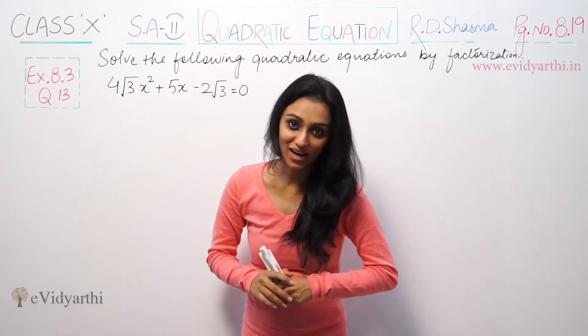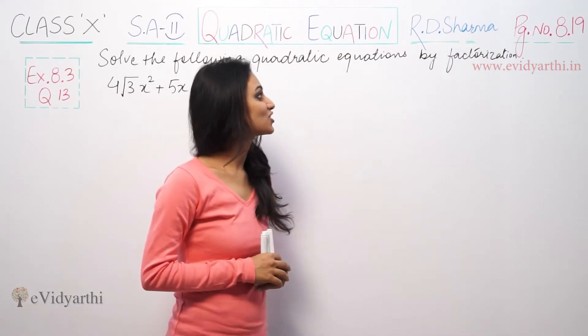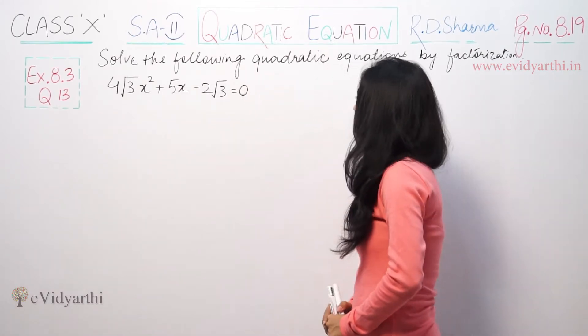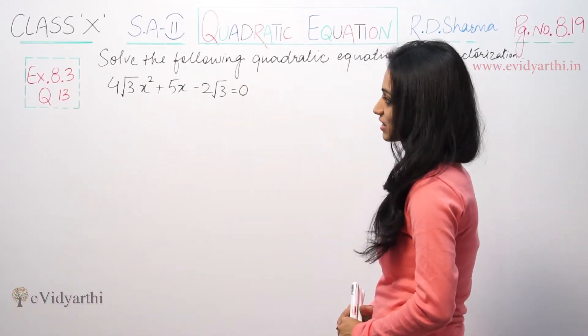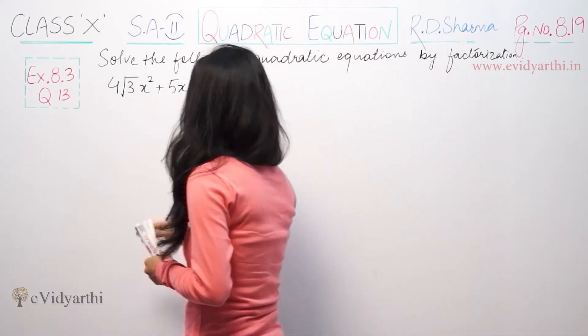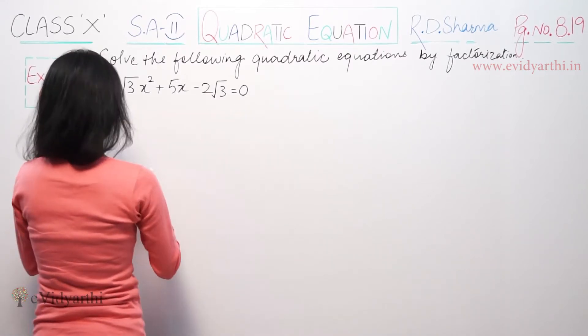This is Khushku with another question of quadratic equation. This is the third question of exercise 8.3, page number 8.19 from RD Sharma. This says solve the following quadratic equations by factorization. We have 4√3x² + 5x - 2√3 = 0.